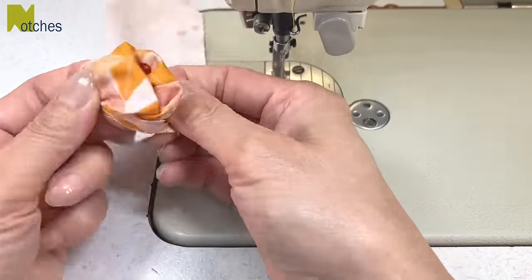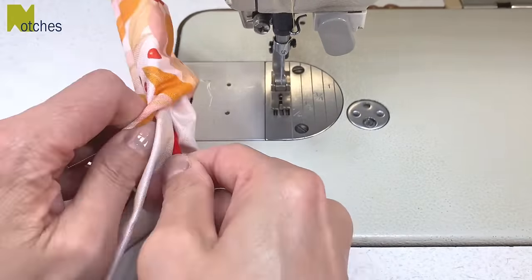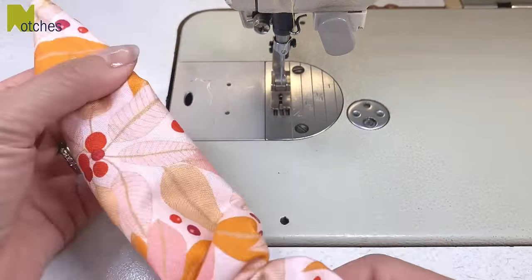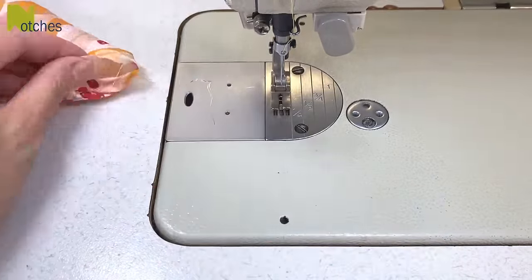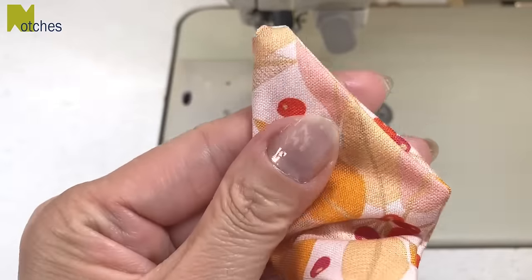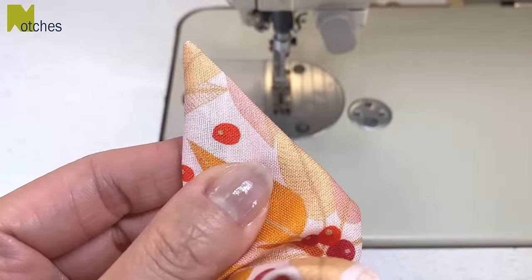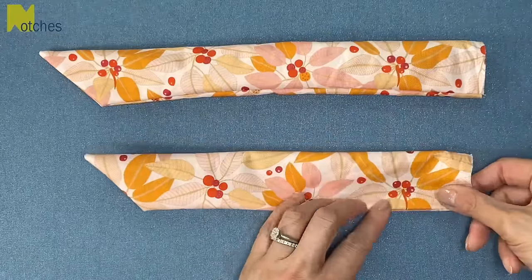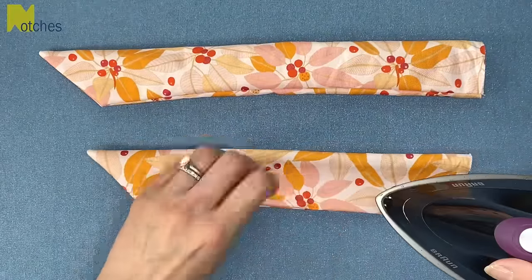Turn right side out. This time I'm going to use the flat end of my knitting needle to help push it through and then I'll use the pointy end to push out the corners. Then repeat for the other strap. Next, adjust the seam so that it's right on the edge and give it a press.